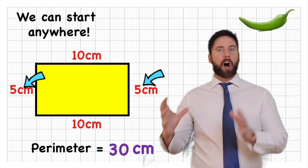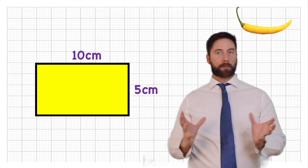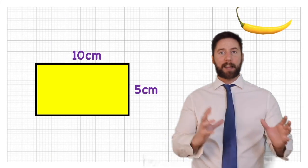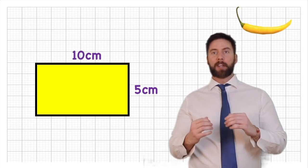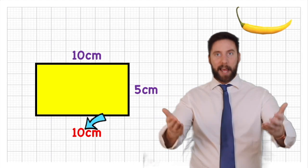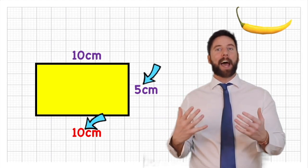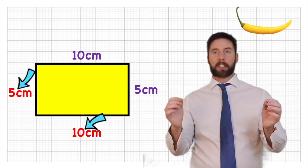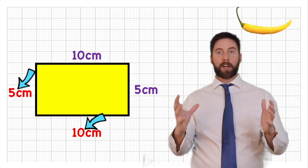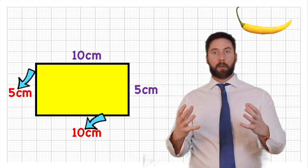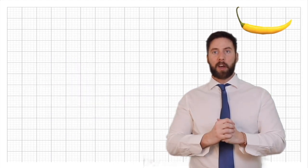Now for an orange chilli challenge — something a little bit harder. Sometimes you won't be given all the measurements and you have to infer them from the information you've already got. Let's look at that same rectangle with some measurements removed. If the top is 10 centimetres, we know the bottom is also 10 centimetres. If one side is 5 centimetres, the opposite side is also 5 centimetres — based on the characteristics of a rectangle. We can deduce the missing measurements using our knowledge of shapes.